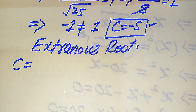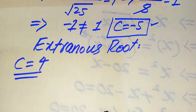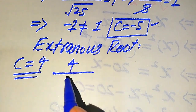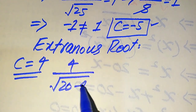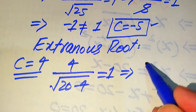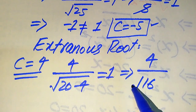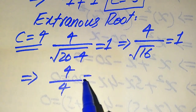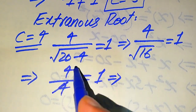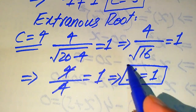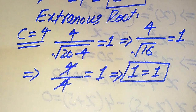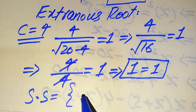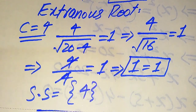Now we verify the second root, C equals 4. Putting C equals 4 into the given equation: 4 divided by the square root of 20 minus 4 equals 1. This gives 4 divided by the square root of 16 equals 1. The square root of 16 is 4, so 4 divided by 4 equals 1, which gives 1 equals 1. This shows that C equals 4 satisfies the given equation, so the solution set is {4}.